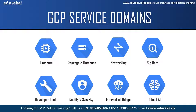Google also provides a free trial to all new customers. It provides $300 in free credit to fully explore and conduct an assessment of Google Cloud Platform. You can use this $300 to try various Google Cloud products and learn how to use them. You won't be charged until you choose to upgrade, and it is valid for 90 days. GCP also has a free tier in which all Google Cloud customers can use selected products like Compute Engine, Cloud Storage, and BigQuery free of charge within specified monthly usage limits.